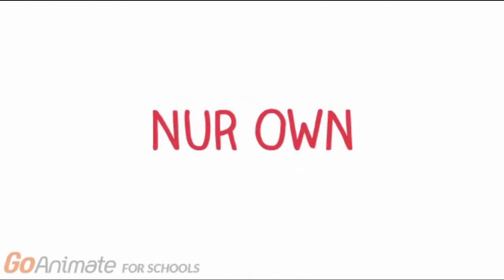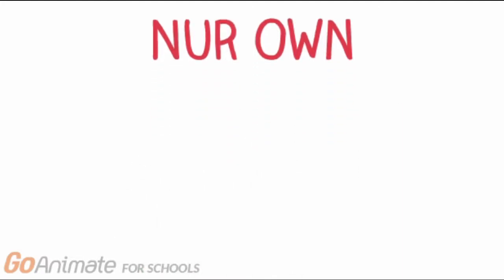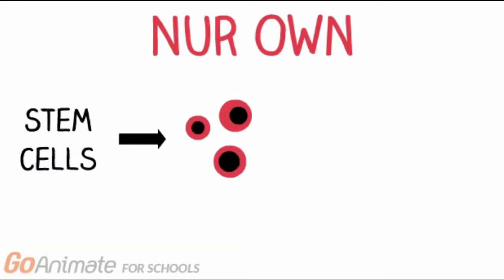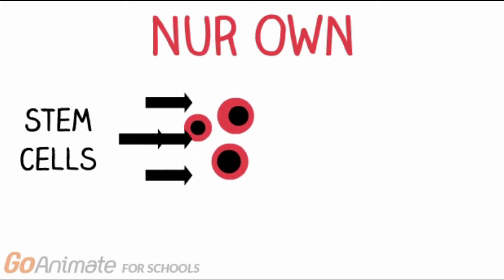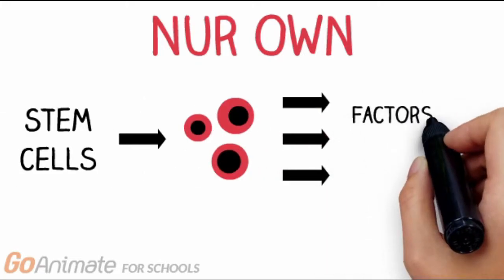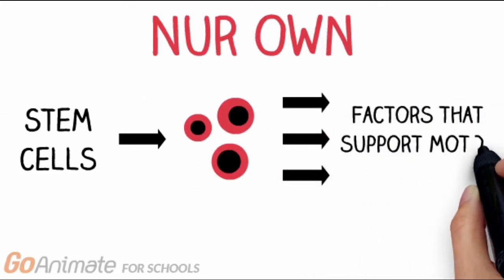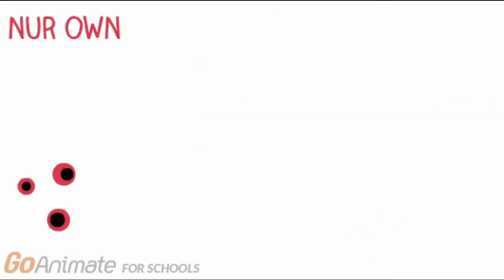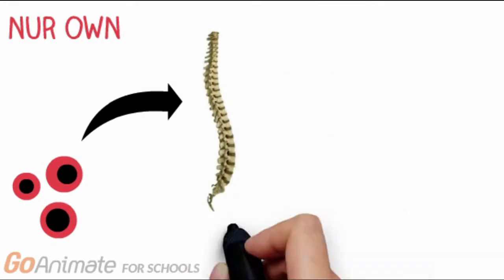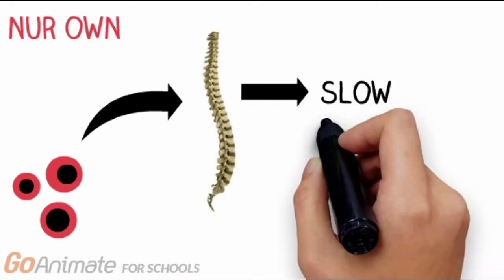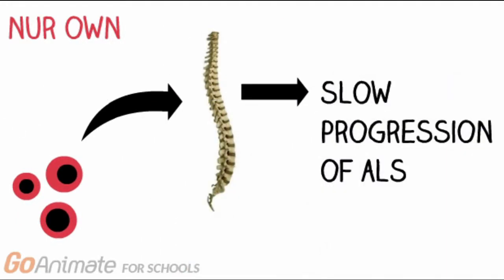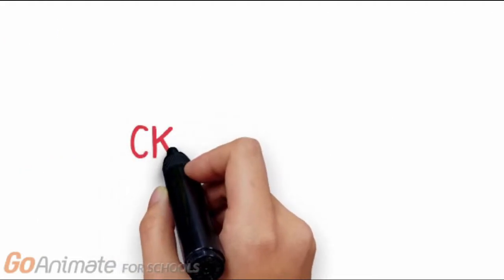One promising drug currently in clinical trials is Neuron. This drug converts stem cells to cells which can release factors that support motor neurons and delay their degradation. The converted cells are injected back into the spinal cord in order to slow progression of ALS.